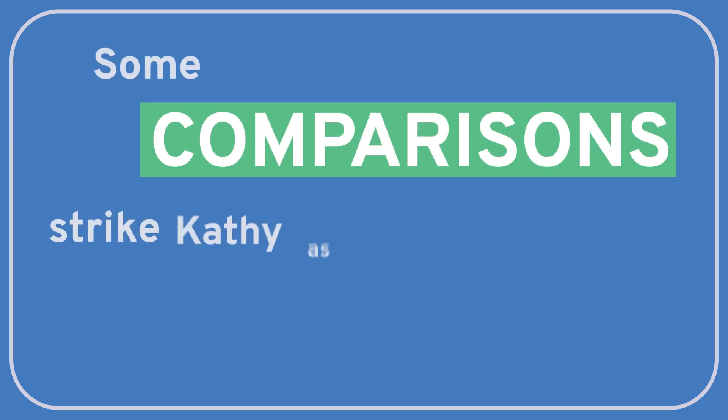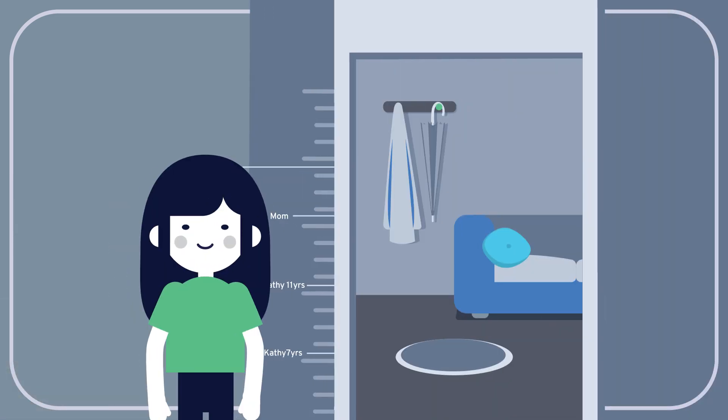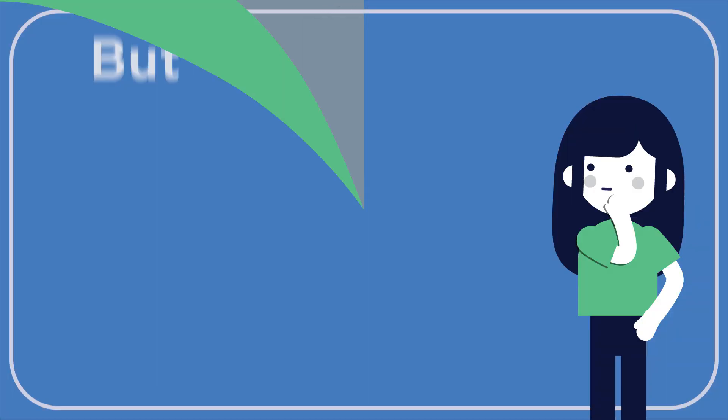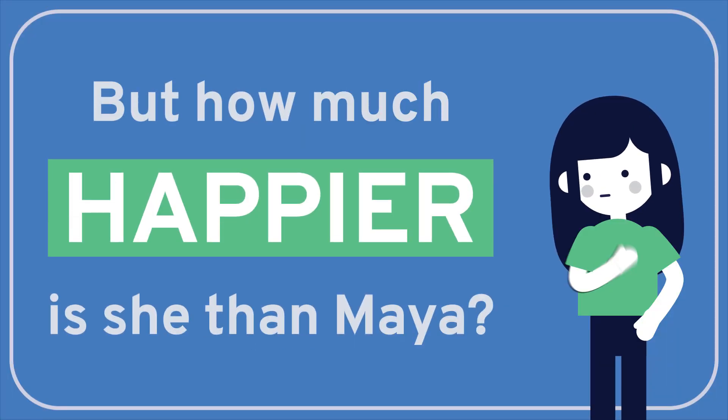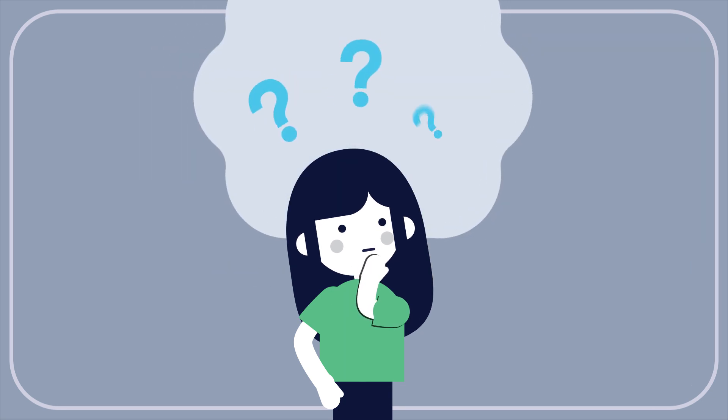Some comparisons strike Kathy as fairly straightforward. She'd have no problem comparing her high school GPA to her college GPA, her own height to her mother's height, or her three-point shot to her teammates. But how much happier is she than Maya? She rarely asks herself questions like this, and now she's not sure how to answer.